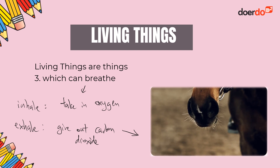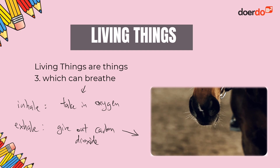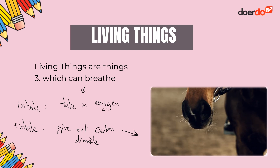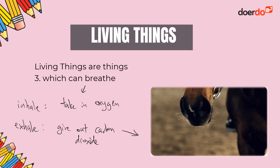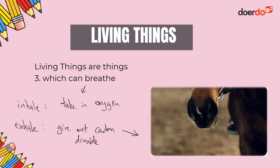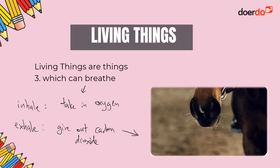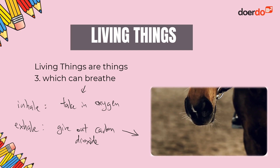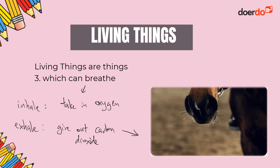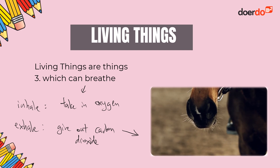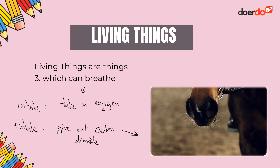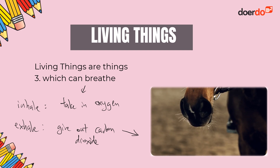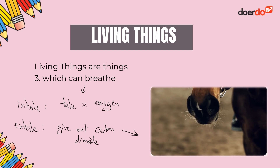The air that the horse breathes out consists of carbon dioxide, but also other gases such as nitrogen and oxygen. When we breathe in, there is a higher percentage of oxygen and a lower percentage of carbon dioxide, compared to the gas we breathe out.